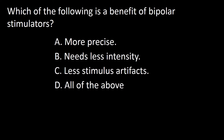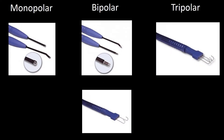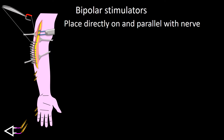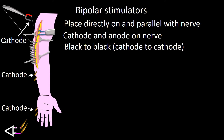Next question: which of the following is a benefit of bipolar stimulators? A: More precise, B: Needs less intensity, C: Less stimulus artifacts, D: All of the above. Stimulating electrodes can be monopolar, bipolar, straight hooked, or tripolar. Bipolar stimulators are placed over the nerve with both cathode and anode on the nerve. The cathode of the stimulating electrode should face the cathode of the recording electrodes. An exception is when stimulating and recording distally and proximally at the same time, placing the cathode toward the muscle.